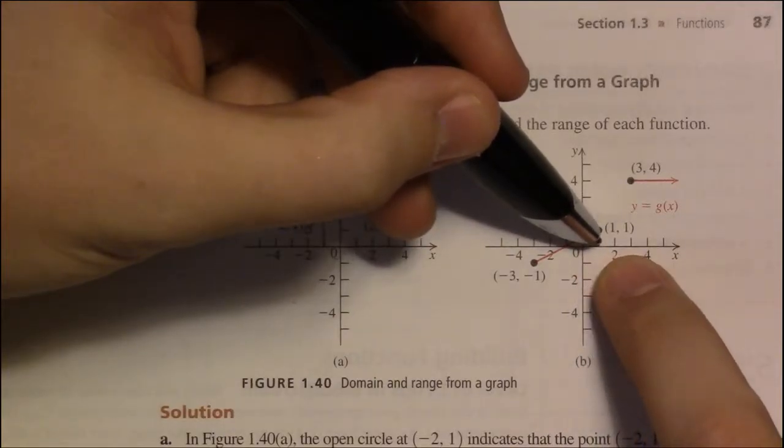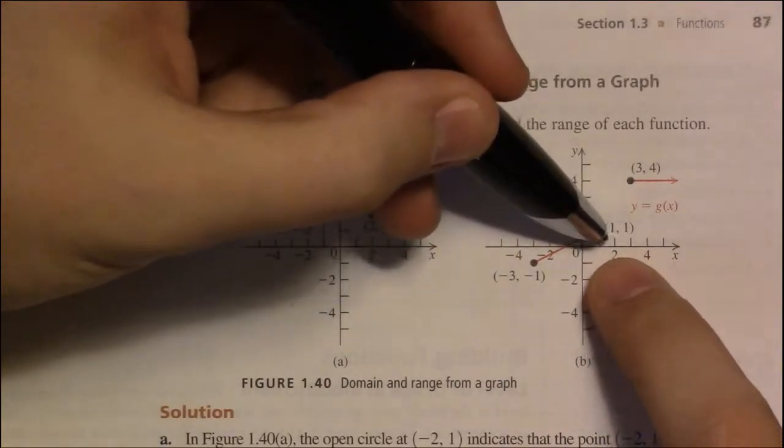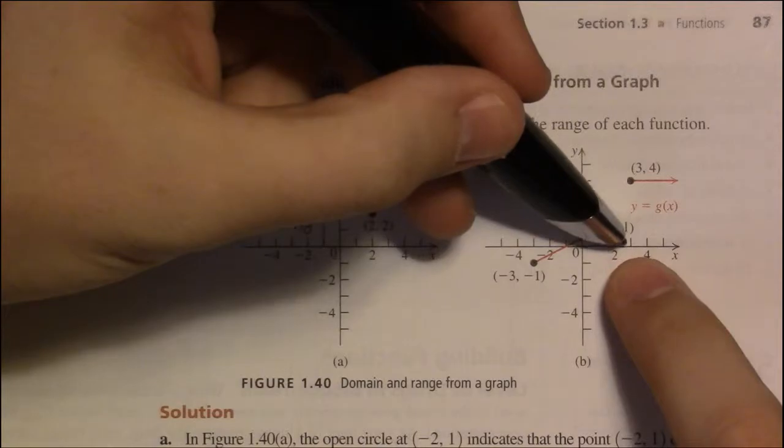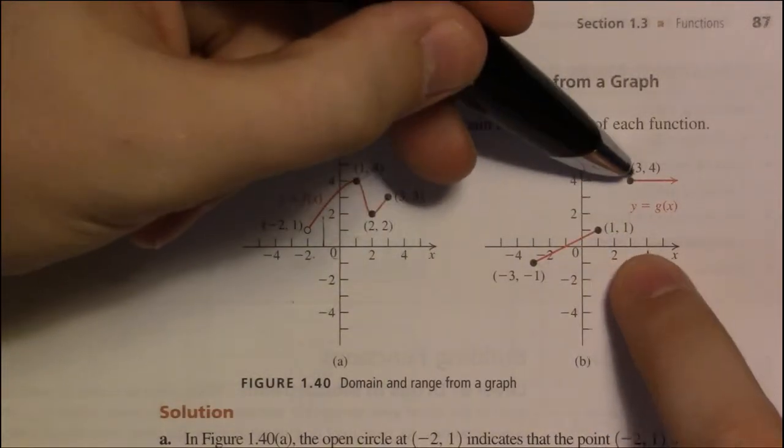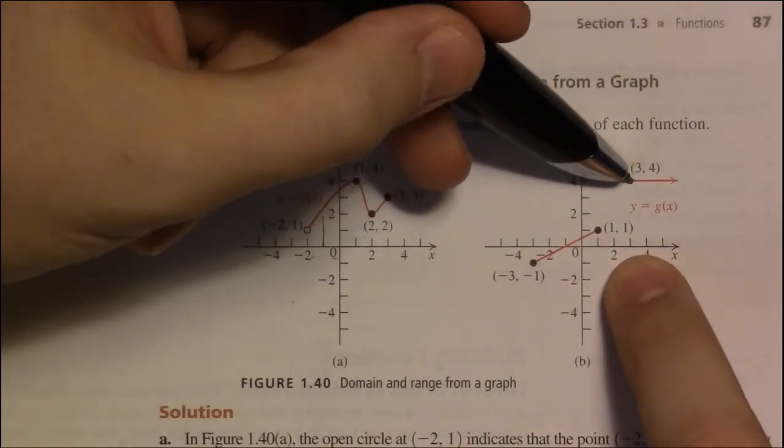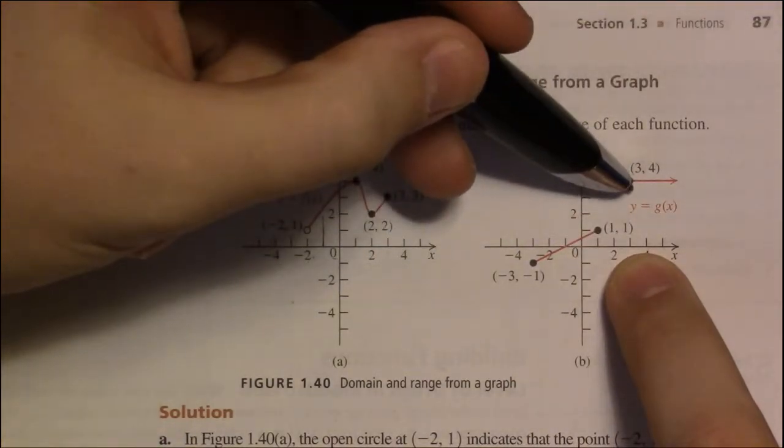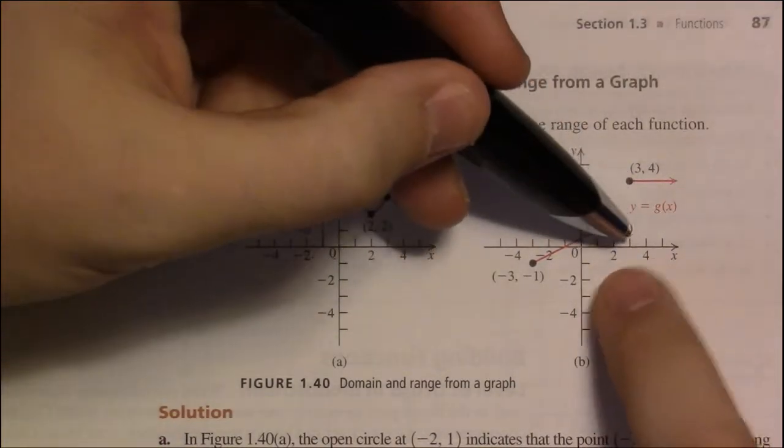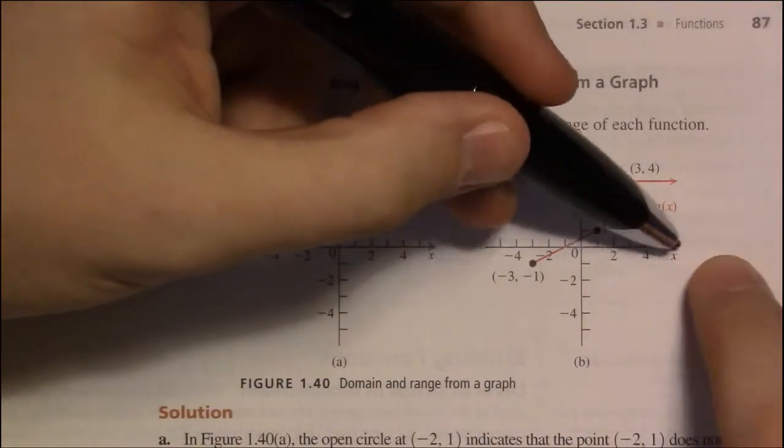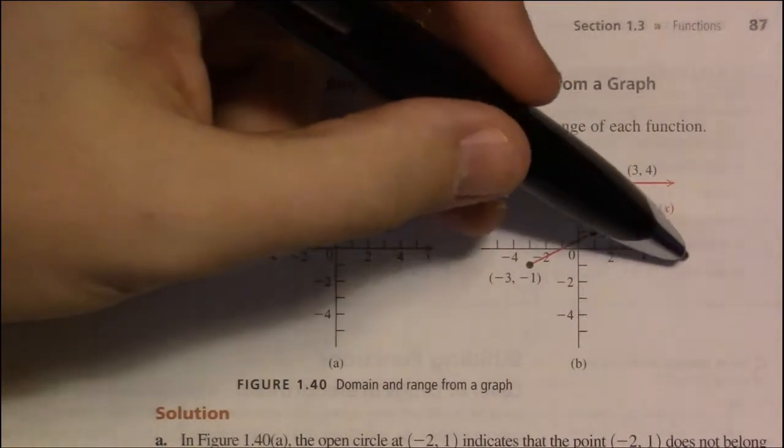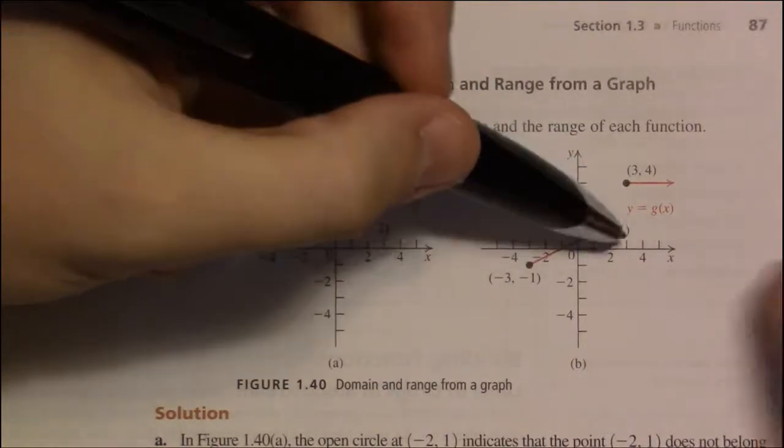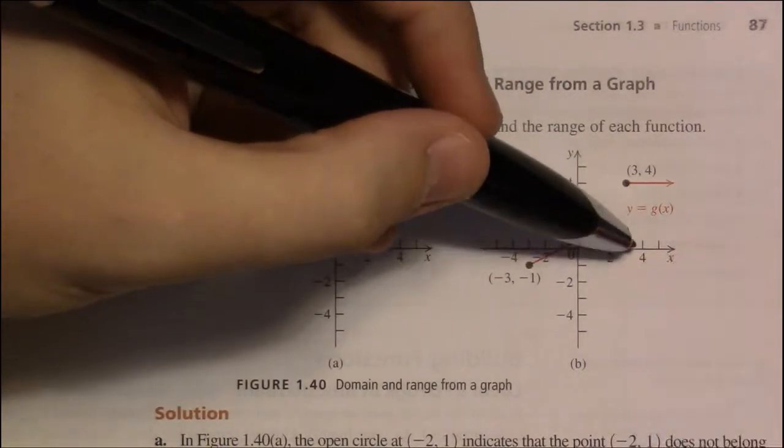Once you hit x equals 1 and go past x equals 1, there's a bit of a gap. There's a gap until you hit x equals 3. And then once you hit x equals 3, you see a bit of the graph on x equals 3, and as you keep walking right, there's still graph to be found all the way for everything to the right of 3.